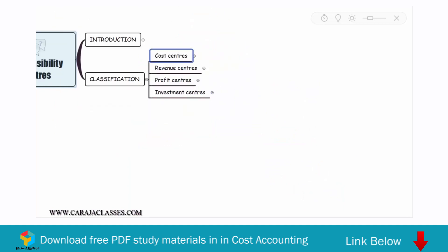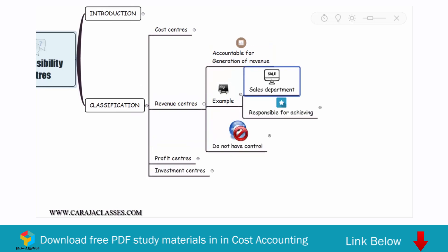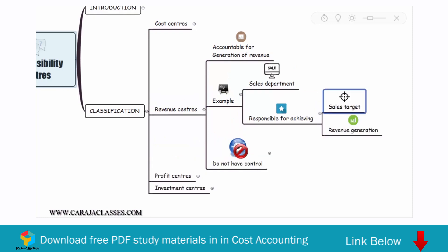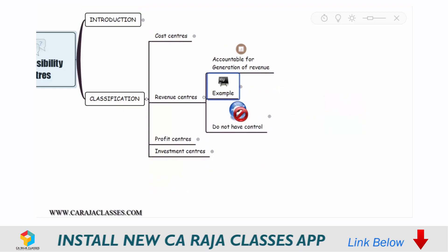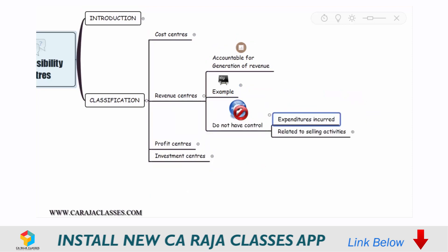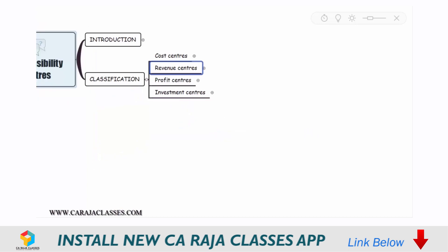Revenue centers are those centers which are accountable for generating revenue for the organization. An example is the sales department. This department is responsible for achieving the sales target and revenue generation for the organization. These departments generally do not have control over the expenditures they incur — such as commissions to salespersons. Their focus is only on the generation of revenue.